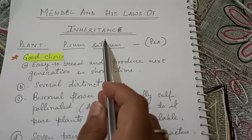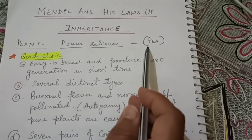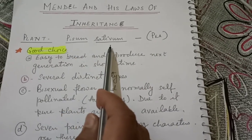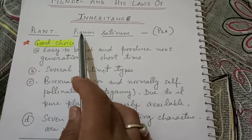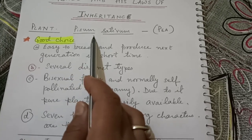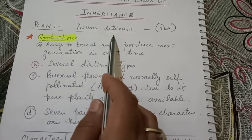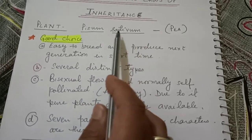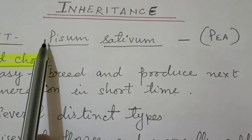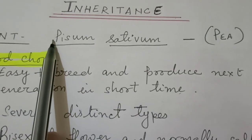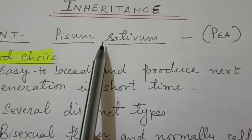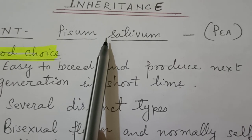The plant taken by Mendel is P. Its scientific name is Pisum sativum. For writing it, Pisum is underlined and sativum is underlined separately. As we know that Pisum is the genus, so P must be capital, and sativum is the species, so S will be small.